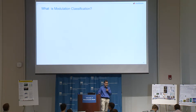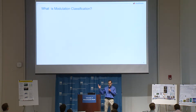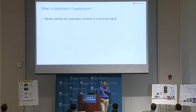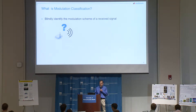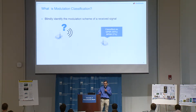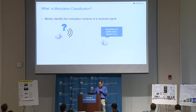So, what is modulation classification? It's basically to blindly identify the modulation scheme of a received signal. We have a receiver, and we don't know what kind of modulation type it's using. A transmitter uses deep learning to figure that out, and says: 'I am 93% confident that modulation type is QPSK, and maybe with 7% chance it's BPSK.' That's what modulation classification is.